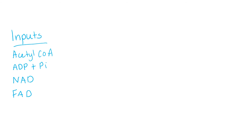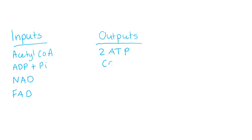And then our outputs — what we get out of the reactions — are two ATP in total, so that's from two cycles of the reactions. We also get some CO2, some NADH, and some FADH2.